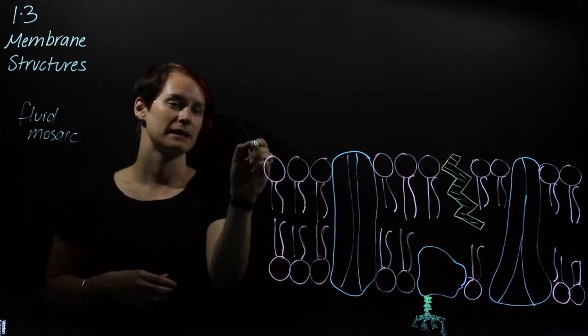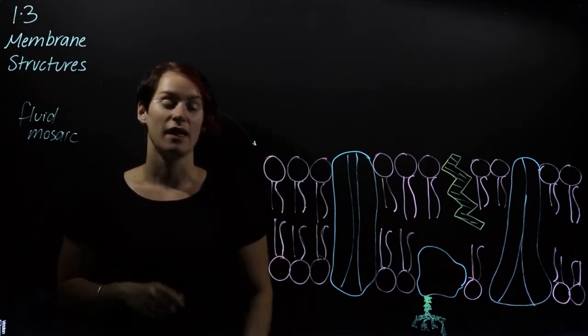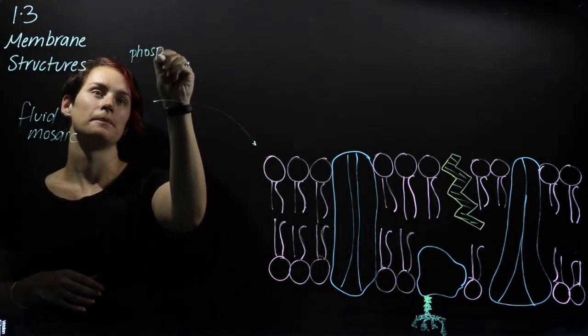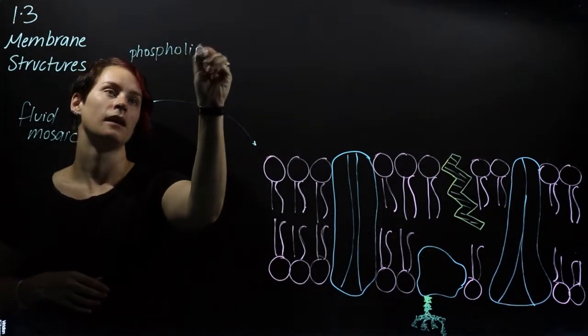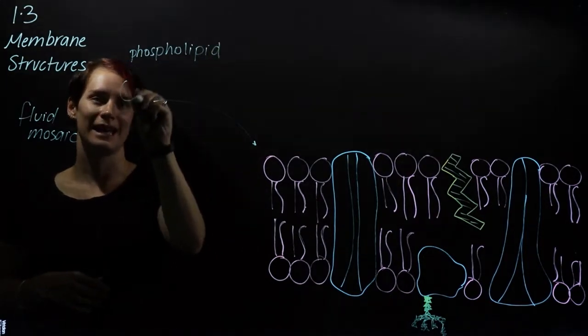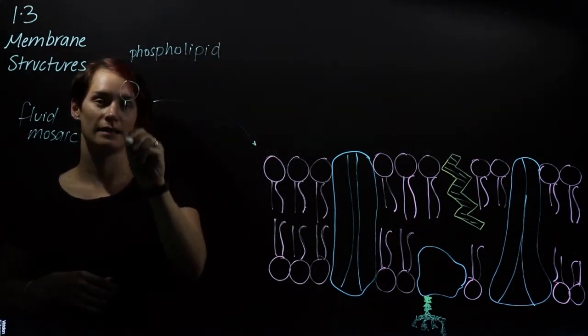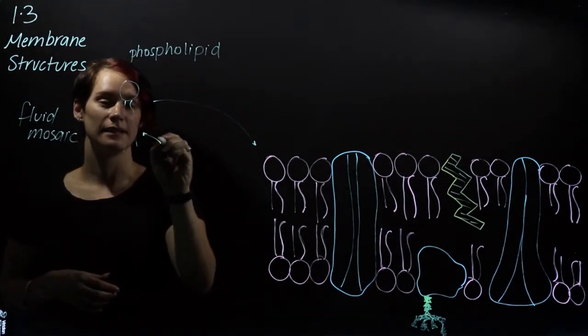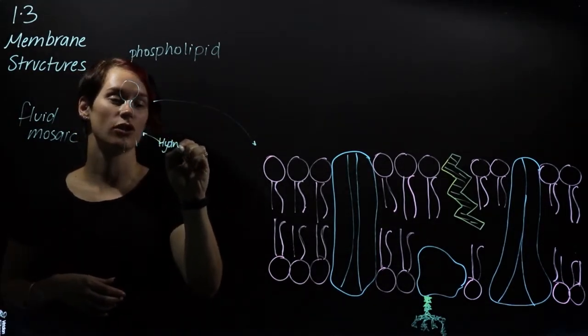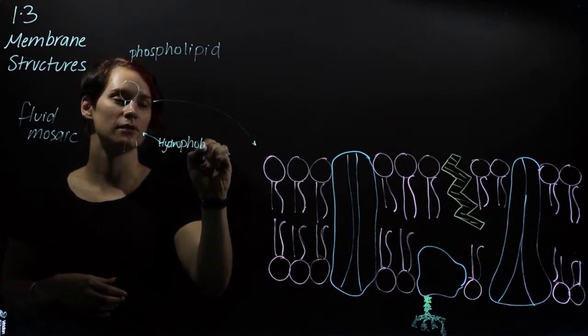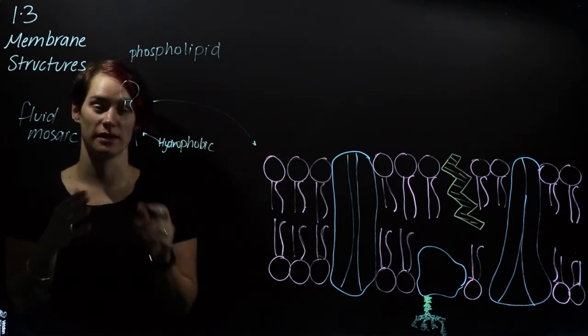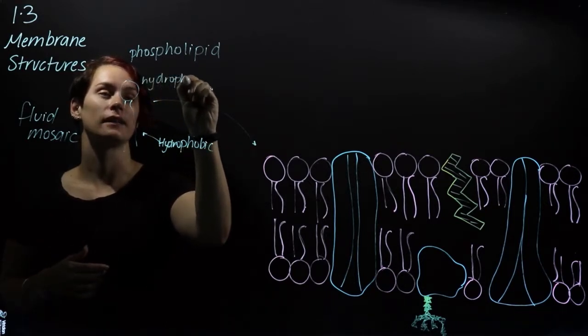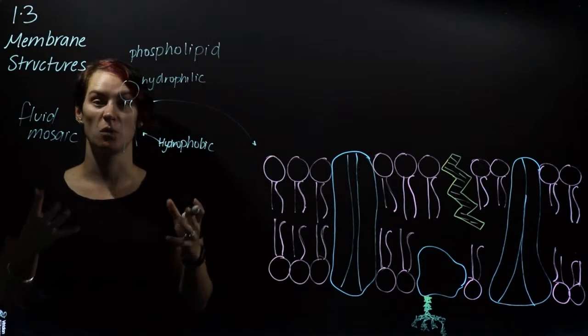Our very first element that makes up the majority of this fluid mosaic is a phospholipid. This phospholipid we represent in this model as having a head and a tail. Now the tail is known as hydrophobic because it has an aversion to water, so it will repel water. But the head is hydrophilic, and that means it's lacking water.